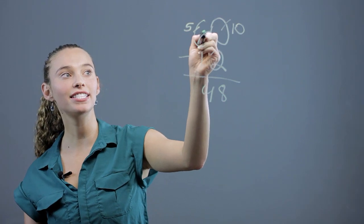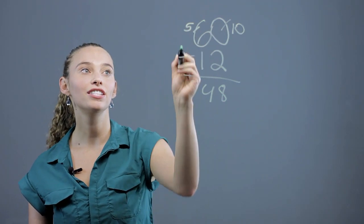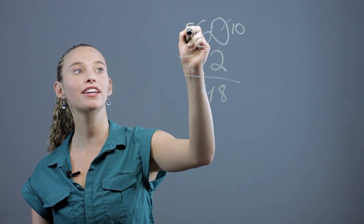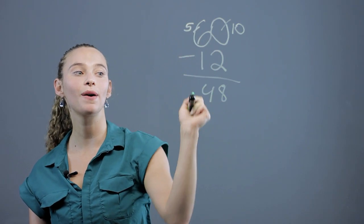You just have to remember that the 6 becomes a 5, so it changes. And so you're not going to subtract 6 minus 1. You're going to subtract 5 minus 1 to get the 4.